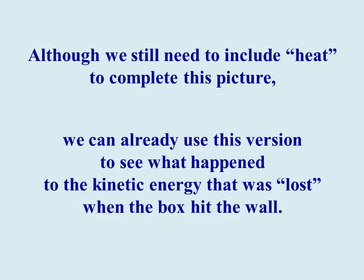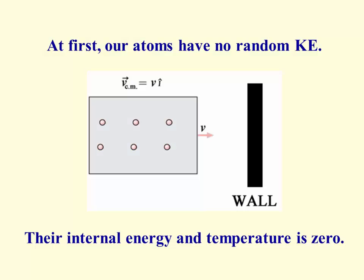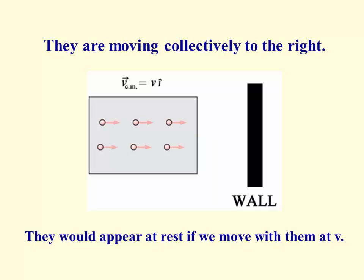Now, although we still need to include heat to complete this picture, we can use this version to see what happened to the kinetic energy that was lost when the box hit the wall. Remember that at first our atoms had no random kinetic energy. They're all in this box at rest relative to the box as the box moves to the right. Their internal energy is zero, their temperature is zero because they have no random motion. They're moving collectively to the right. If we move at velocity V relative to the box, we see all those little atoms at rest, no random energy.